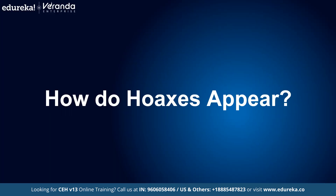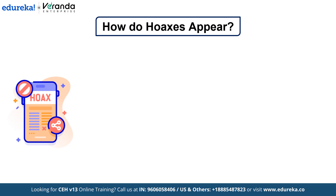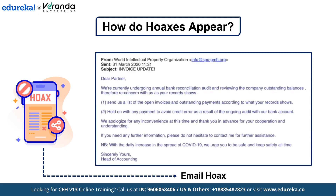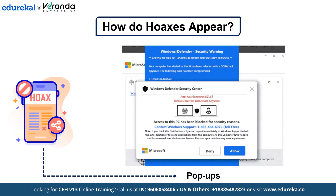Now that we know what virus hoaxes are, let's break down how these scams appear in different forms and trick us into taking hasty actions. Hoaxes can appear in several different forms but they all aim to deceive you into thinking you need to take immediate action. First, emails — a typical hoax might land in your inbox with an urgent message like 'your computer is infected, click here to remove the virus,' aiming to get you to open an attachment, download malicious software, or follow instructions that will put your data at risk. Next is pop-ups — while browsing the web, you might encounter pop-up warnings that seem to come from your anti-virus software, claiming your system has been infected and directing you to fake websites that ask for personal details or prompt you to download harmful programs.